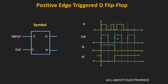At the next rising edge, the D input is equal to 0, and therefore output Q will also become 0. It will remain in that state until the next clock transition. At the following rising edge, D input is still equal to 0, so this output Q will remain 0. This is the Q output of this D flip-flop. The Q-bar output will be exactly opposite to the Q output.